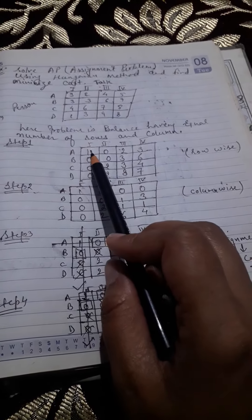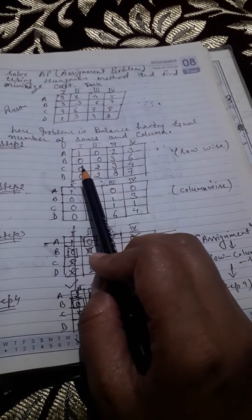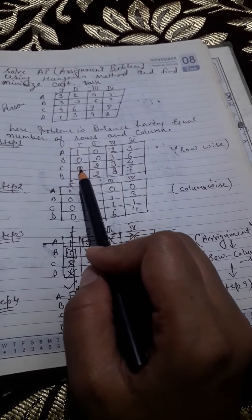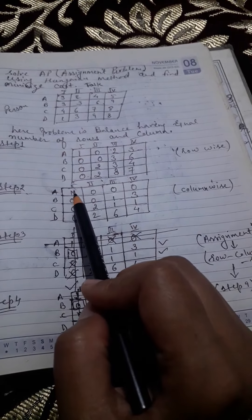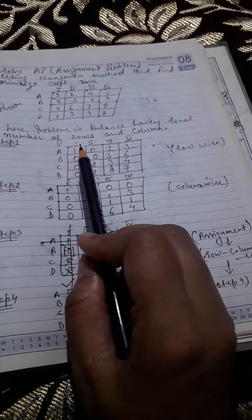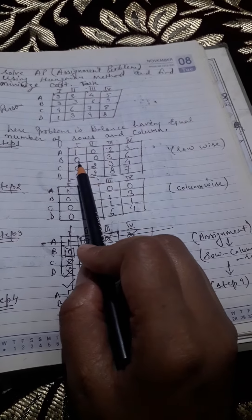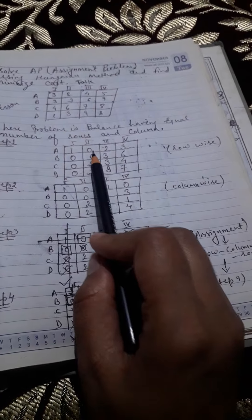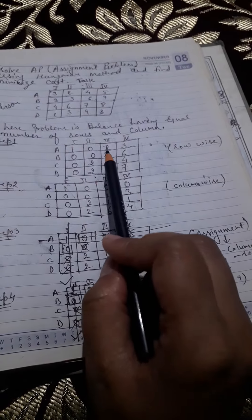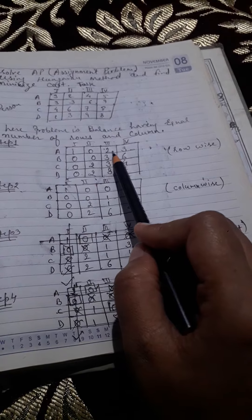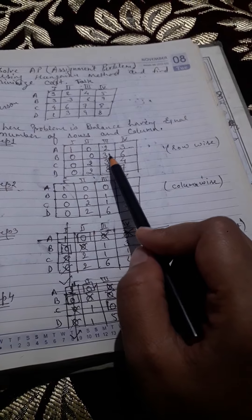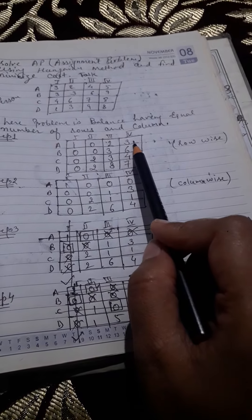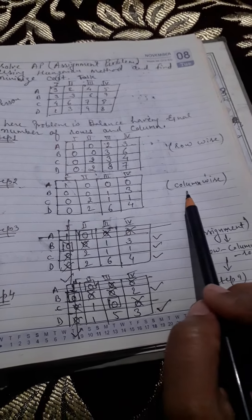The second step is column-wise reduction. From each column, select the least number and subtract it from each element of that column. From the first column, the least number is zero, so the result remains the same. From the second column, the least number is also zero, so the result remains the same. In the third column, the least number is two, so subtracting two gives zero, one, one, and six. From the fourth column, the least number is three, so we subtract three from each element.